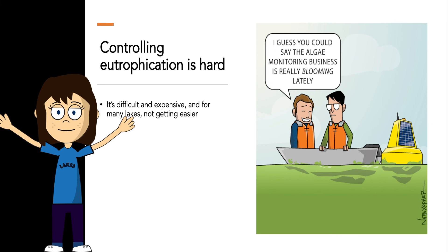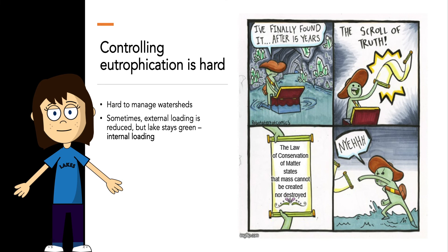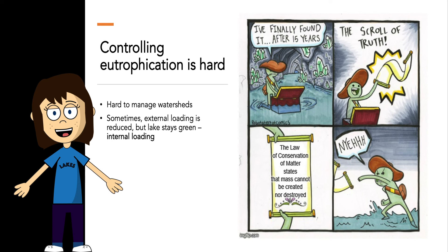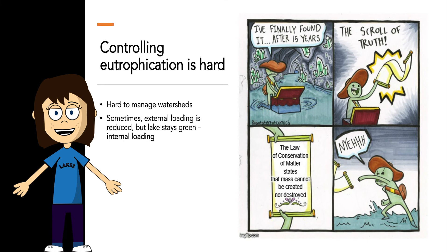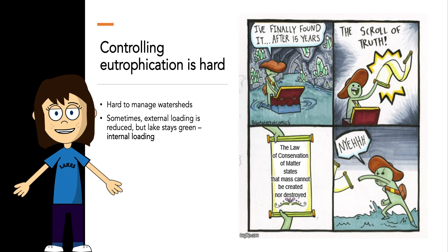But controlling eutrophication is hard — if it was easy, it wouldn't be a $2 billion problem, and it seems to be getting more difficult and more expensive all the time. There are two major reasons why it's so difficult to remediate eutrophied lakes. First, it's hard to manage watersheds — there's a lot going on, and it's really difficult to control non-point source pollutants. Second, we have to contend with internal loading. Sometimes we can reduce nutrients coming into a lake, but if there's already a lot of nutrients within the water column or in the lake sediments, those nutrients can provide ample nutrition for algae over a long duration. If the bottom of a lake goes anoxic, it can actually release phosphorus from the sediments back into the water column.